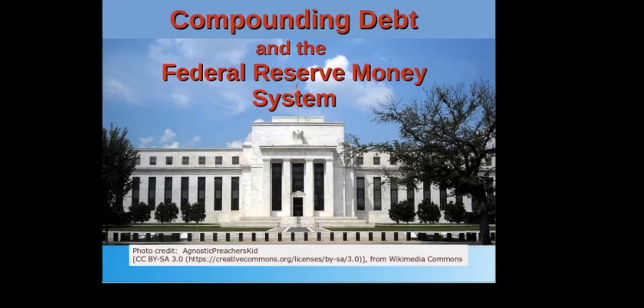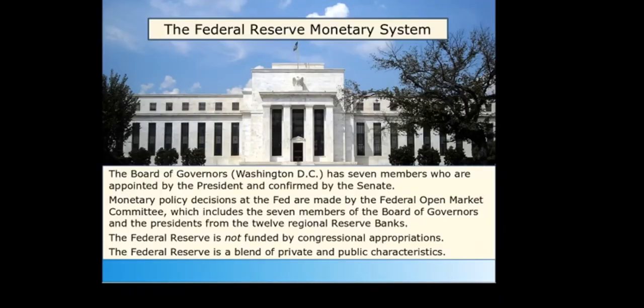Now the slideshow focused on the Federal Reserve compounding debt. This is a photograph of the Mariner Eccles Federal Reserve Building in Washington DC. The Federal Reserve, often referred to as the Fed, is the central bank of the United States. The system is a blend of private and public characteristics. The Fed includes the Board of Governors in Washington DC, which has seven members including the Chairman and Vice Chairman, all appointed by the President and confirmed by the Senate. Appointments are for 14 years and are staggered so there is one vacancy every two years.